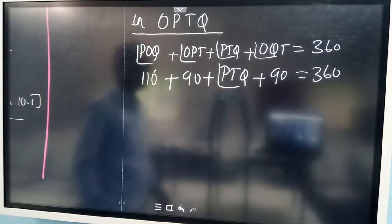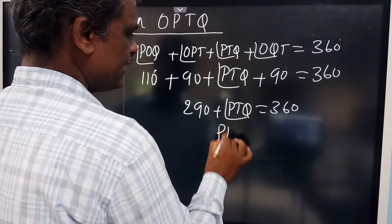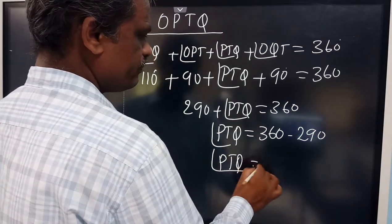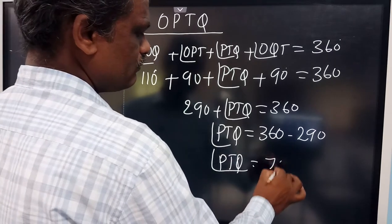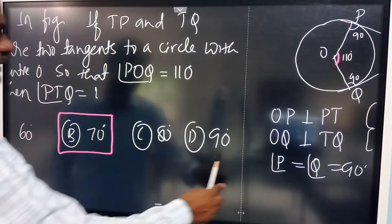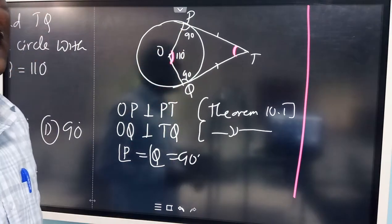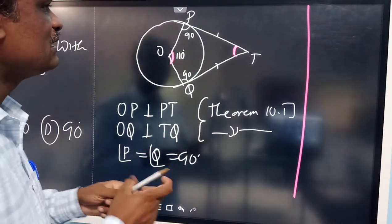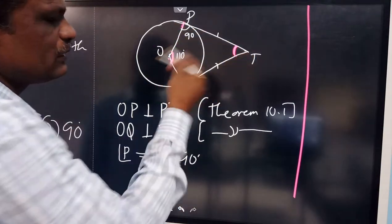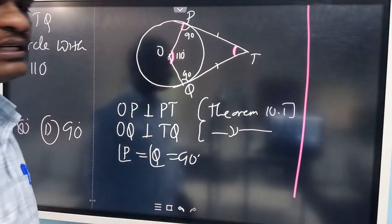So angle PTQ = 360° − 290° = 70 degrees. That is option B, the correct answer. Remember that angle POQ and angle PTQ are always supplementary — since the two right angles account for 180°, the remaining 180° is shared between these two angles. So directly: angle POQ + angle PTQ = 180°, giving PTQ = 70°.